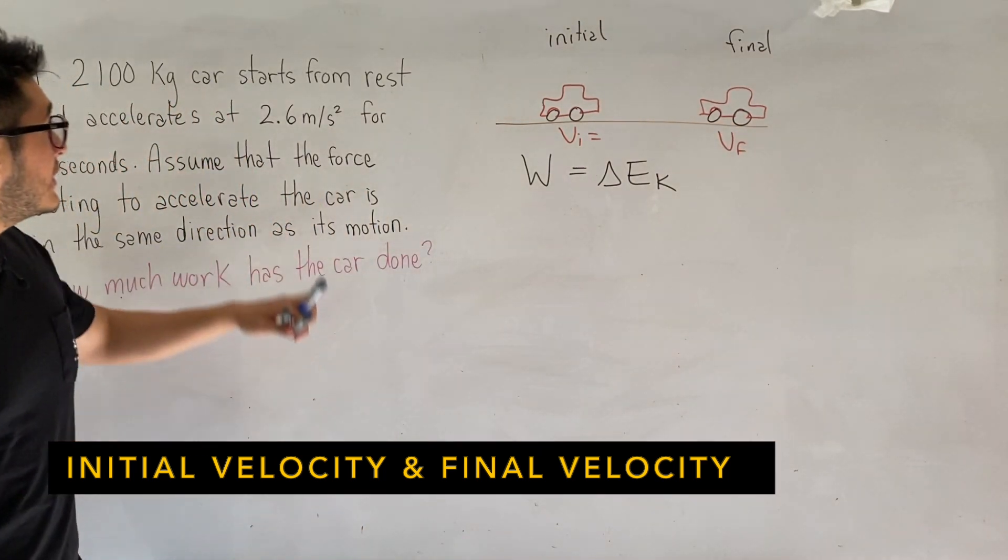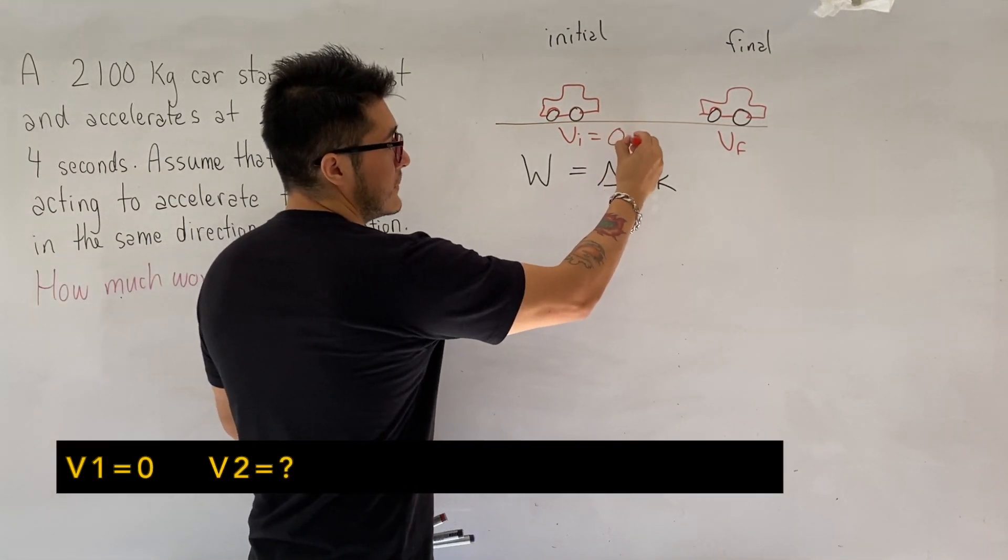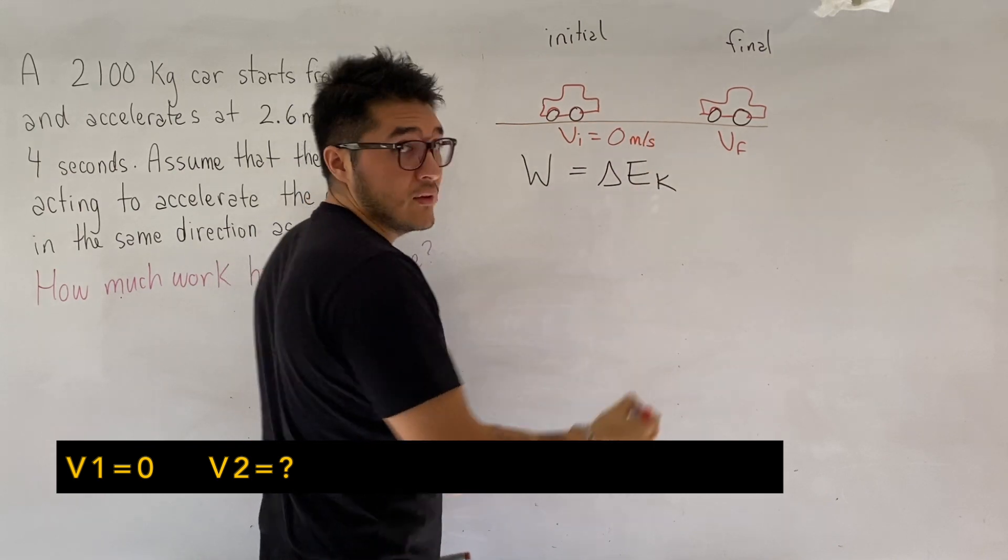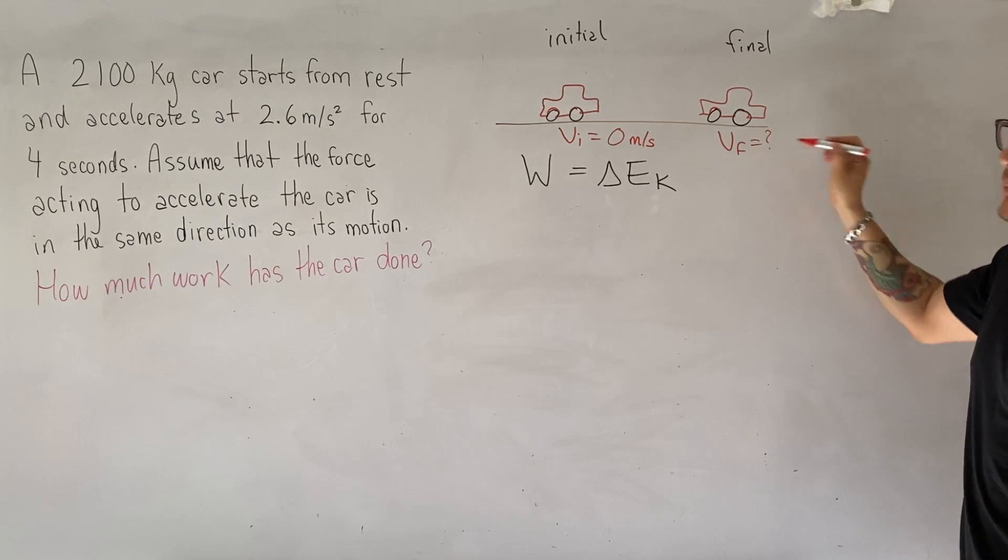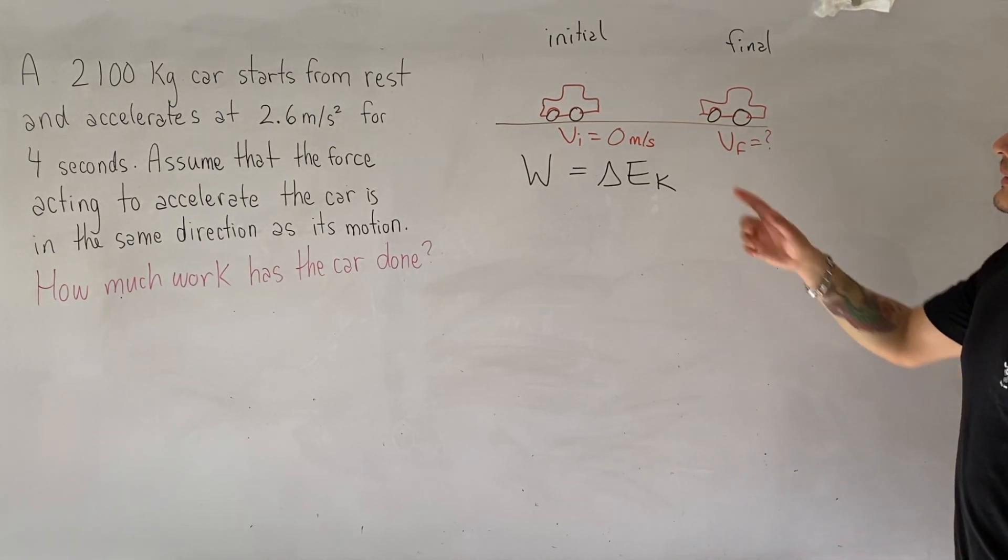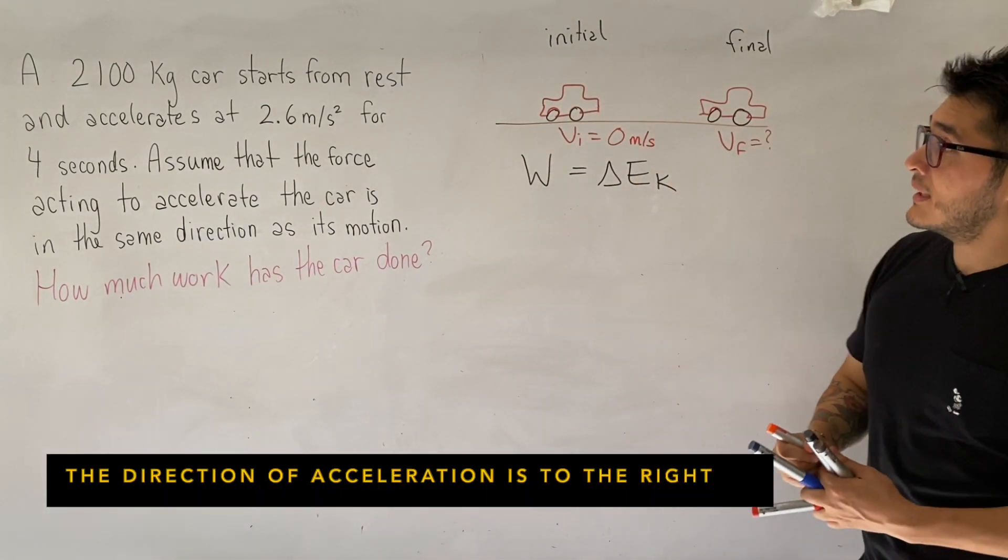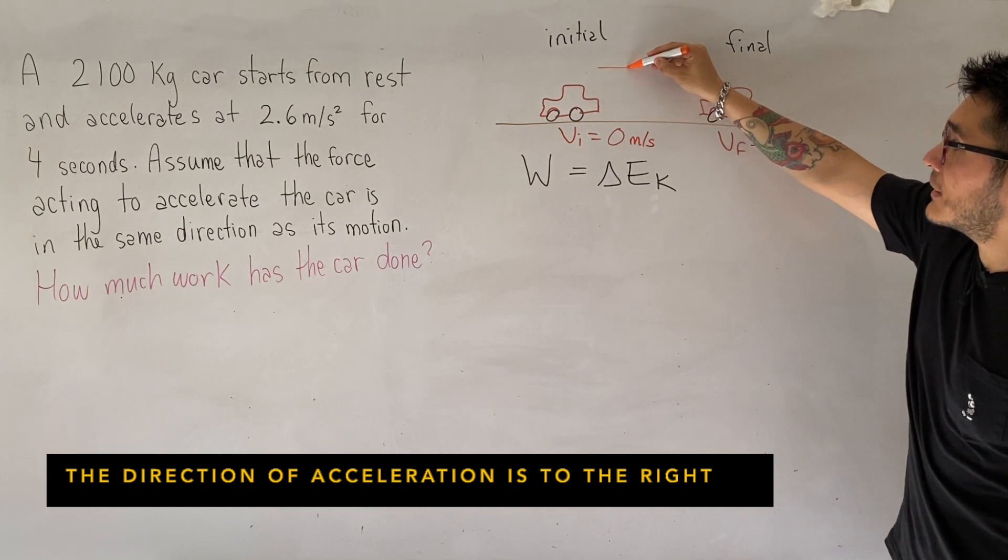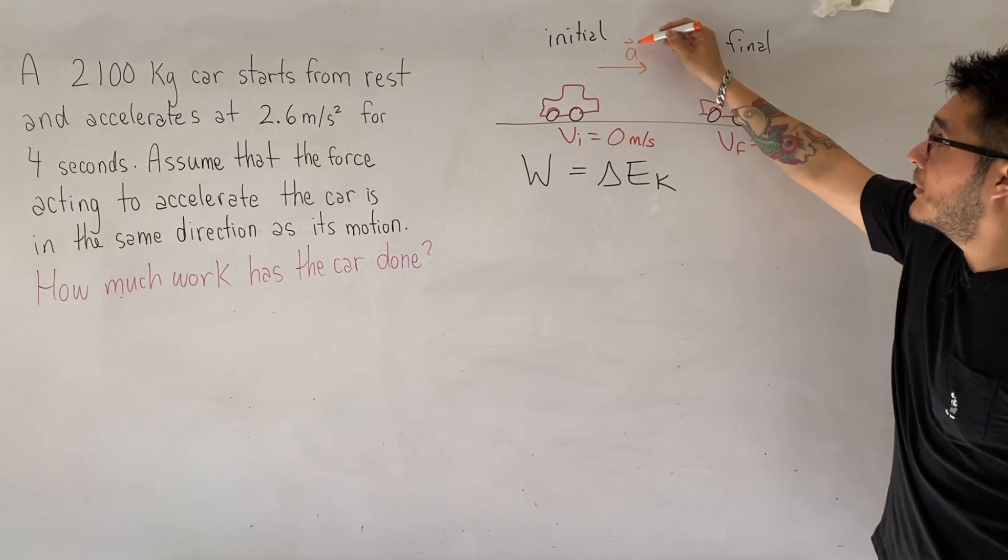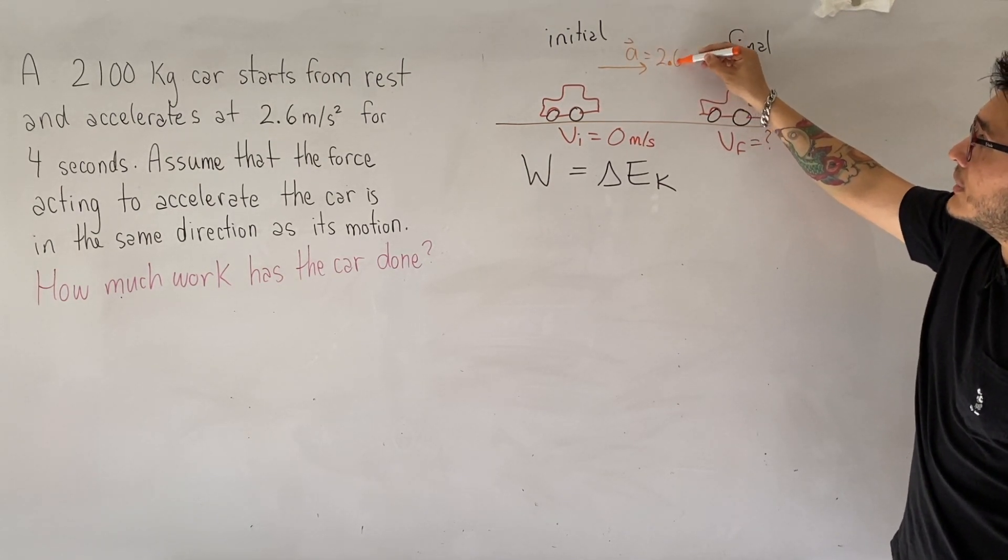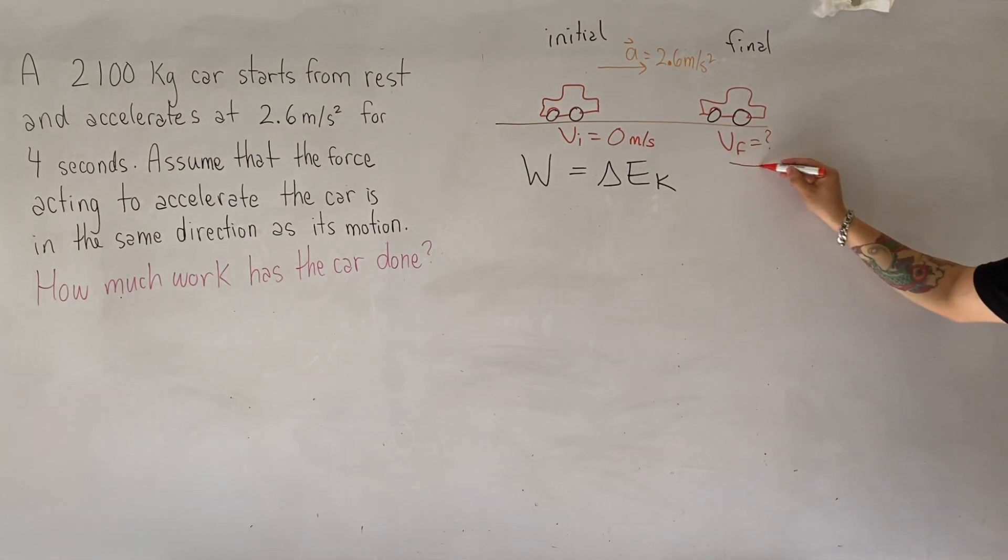So the initial velocity—the car is starting from rest, so if it starts from rest, the initial velocity is zero. The final velocity, we don't know, so we're going to leave it as an unknown. So put a question mark, right? Initial velocity, final velocity, and the car, it is accelerating, so the direction of acceleration, we're assuming, is to the right because it is speeding up in that direction with 2.6 meters per second squared.